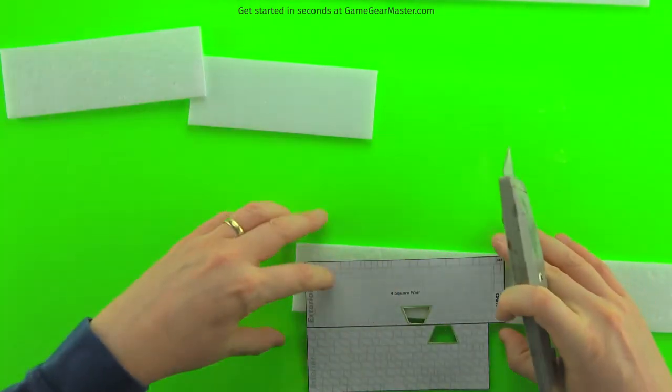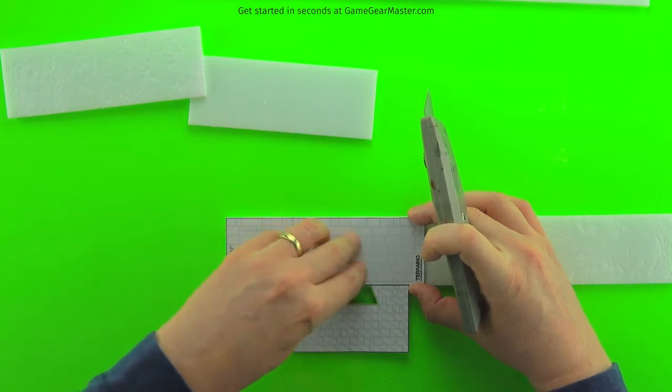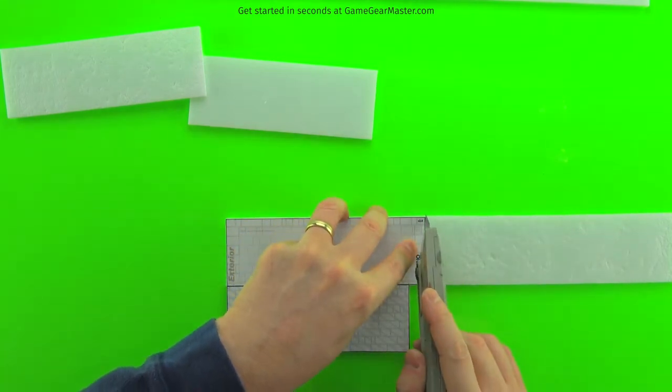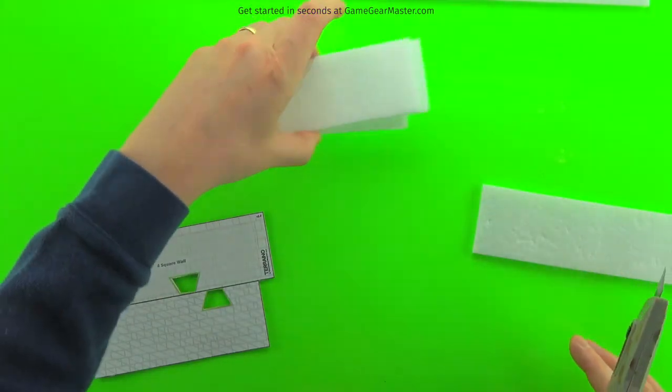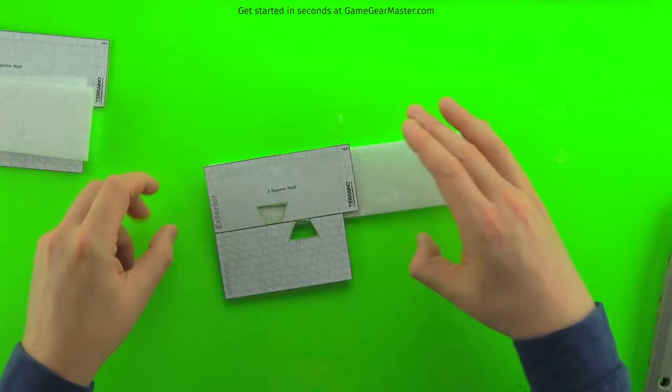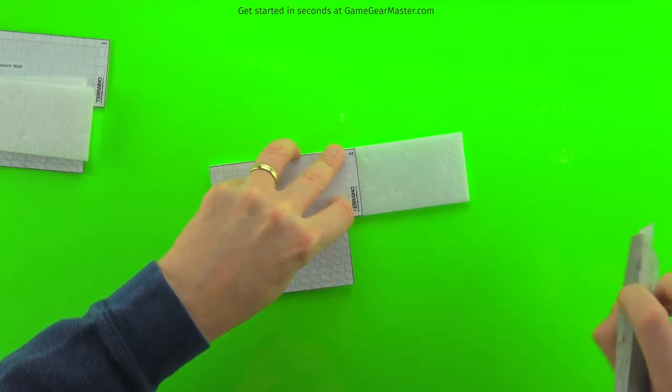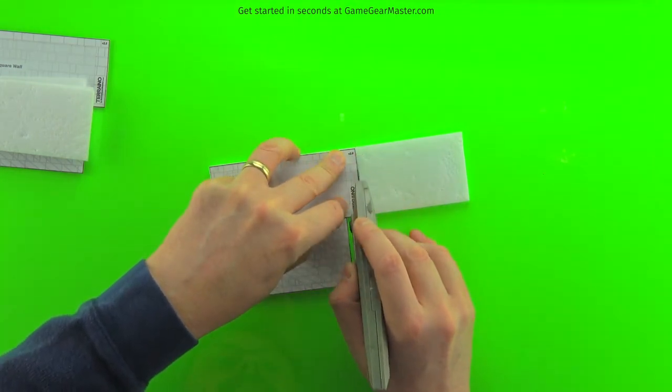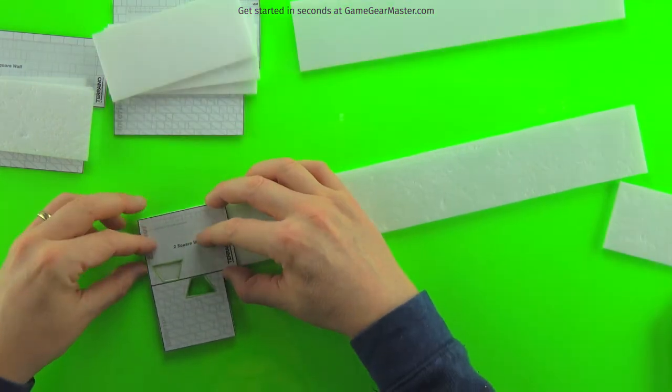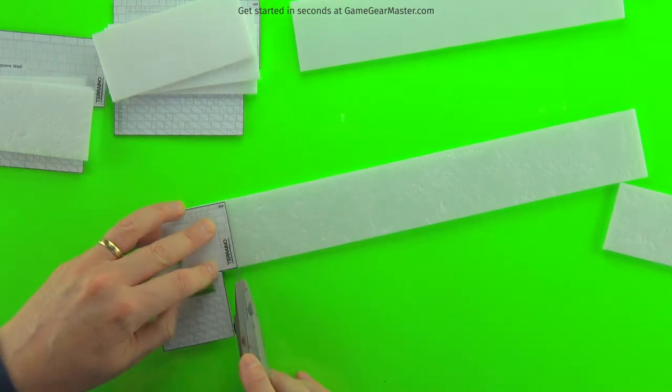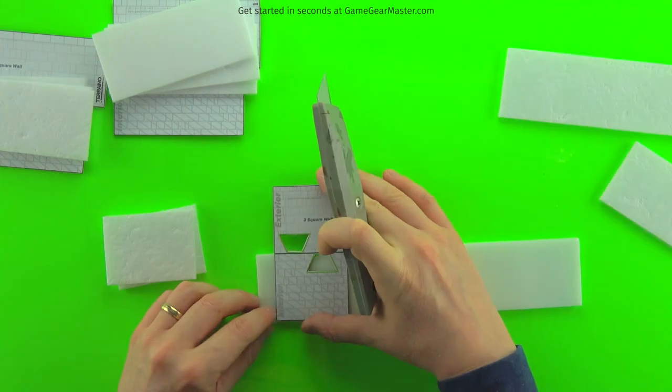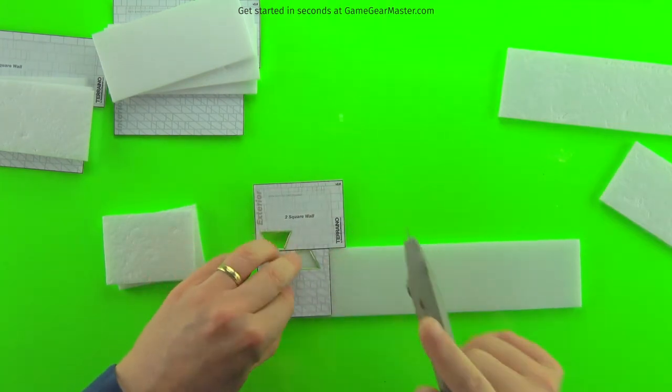And there's four different wall templates. There's a four square wide wall, three square wide wall, two square wide wall and one square wide wall. When referring to squares on these templates, they're referring to the squares on the grid tiles. They also correspond to one square equals five feet in games like Dungeons and Dragons. In this example, I'm making one of each of the wall types. You can see each one. And again, I'm cutting two exterior pieces for each one interior piece for the wall.